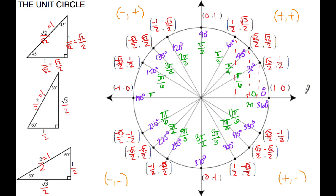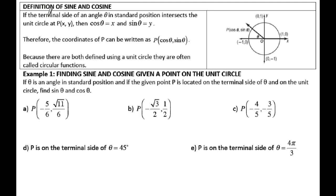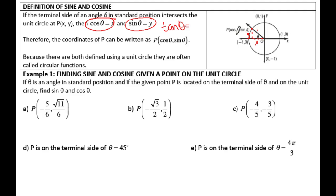What we can use the unit circle for is to find exact values of trig functions. The definition of sine and cosine on the unit circle: sine corresponds to your y-coordinates, and cosine corresponds to your x-coordinate. The reason why is that your radius on the unit circle is 1 unit. Cosine is adjacent over hypotenuse, so x over 1, which is just x. Sine is y over 1, which is just y. And tangent is opposite over adjacent, which is y over x. So as long as the point is on the unit circle, cosine of theta is your x-coordinate, sine of theta is your y-coordinate.